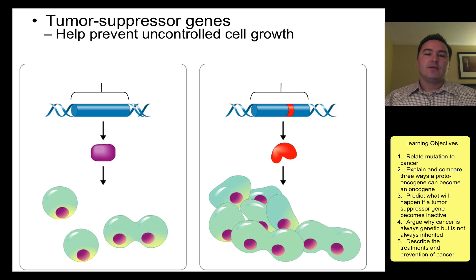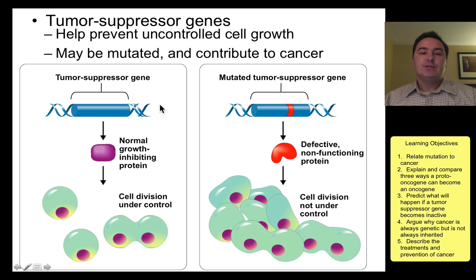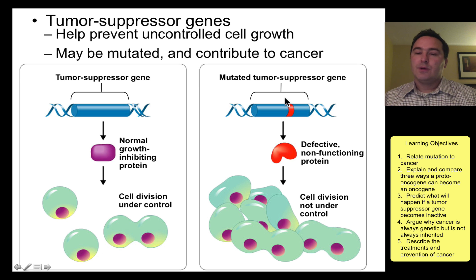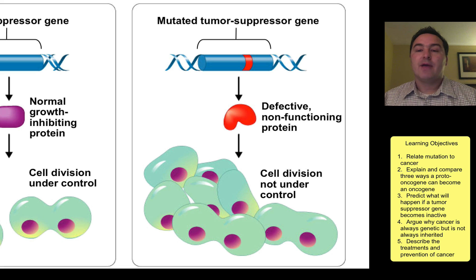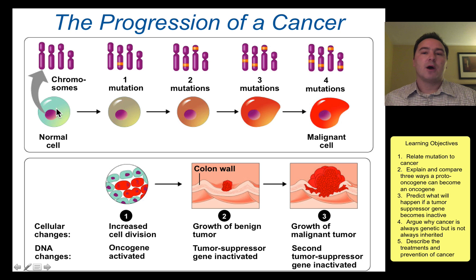Another possible way that this can happen is by changing the so-called stoplight genes, or the tumor suppressor genes. In the normal condition, the gene produces a protein, and that protein turns on the red light and says: stop, do not go too fast into cell division. You could have a mutation on this gene — for example, maybe a one-nucleotide insertion that causes a frameshift. Now you have a very different protein being produced that is defective and non-functional. Therefore, there is no red stoplight, and the cell divides out of control. Those are the two general models for how cancer can come about.